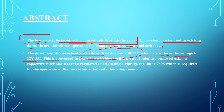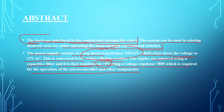Unless you know how the step-down transformer and bridge rectifier work, it will be difficult to understand the block diagram. Ripples are removed using capacitive filters, and the voltage is regulated to 5V using voltage regulator 7805, which is required for the operation of the microcontroller and other components. So the power supply chain is: step-down transformer → bridge rectifier → capacitive filter → voltage regulator.